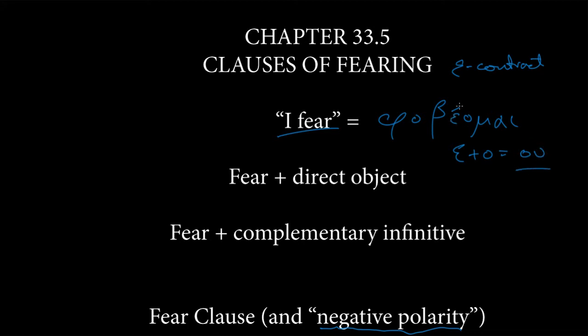But we know that epsilon plus omicron in practice is going to result in a diphthong omicron upsilon. And in this case, since we've got an acute accent on the first part of that contraction, this is going to turn into a circumflex accent over the diphthong, φοβοῦμαι. But this is all coming from an epsilon contract verb, φοβέομαι.